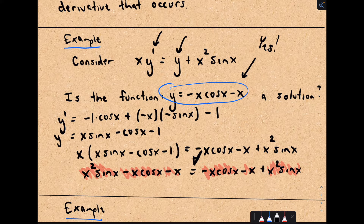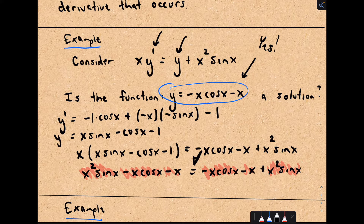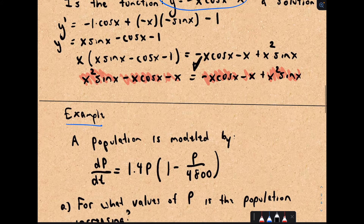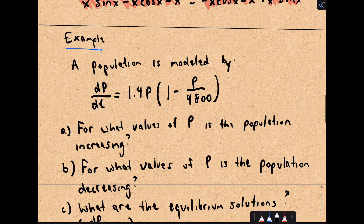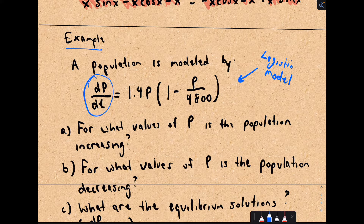Ultimately, what we'll want to do is go from these differential equations to finding their solutions. Depending on the type of differential equation you have, there's a myriad of different techniques. Now let's look at one other important example — a very popular model for population growth known as the logistic model. You can think about it in terms of a differential equation: the change in population with respect to time, or p prime, equals 1.4 times the population at that moment, multiplied by the quantity 1 minus p divided by 4,800.